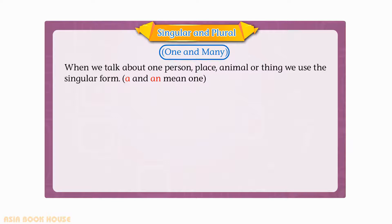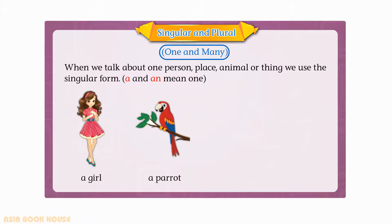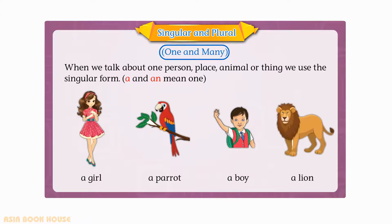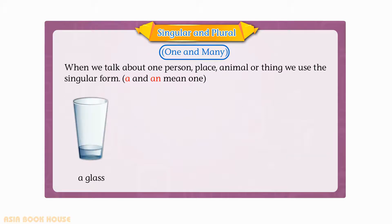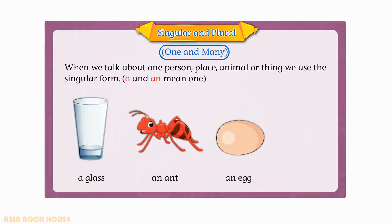A and an mean one. A girl, a parrot, a boy, a lion, a glass, an ant, an egg, a school.